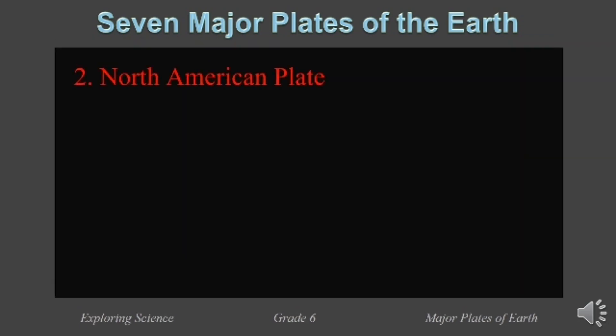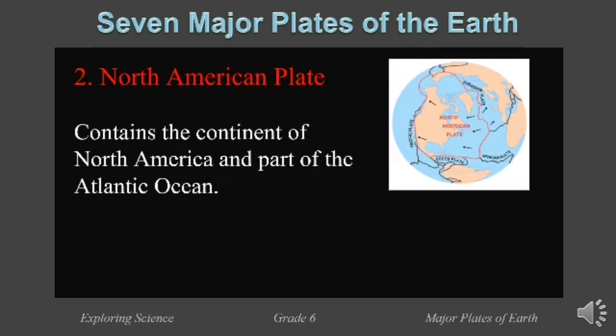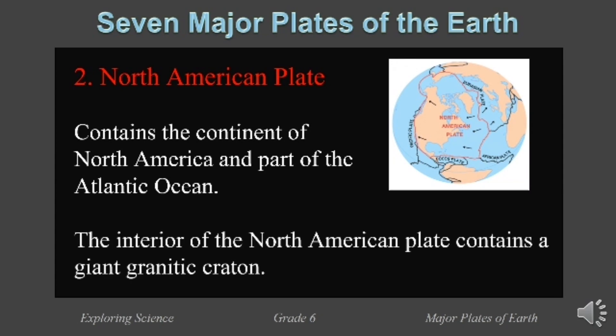Second, it is the North American plate. The North American plate contains the continent of North America and part of the Atlantic Ocean. The interior of the North American plate contains a giant granite crater. It is believed that the North American crater is 4 billion years old.